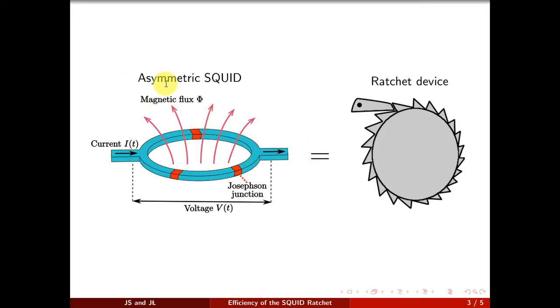We study an asymmetric SQUID constructed as a loop with three Josephson junctions. Two of them are placed in one arm whereas the third is located in the other arm.